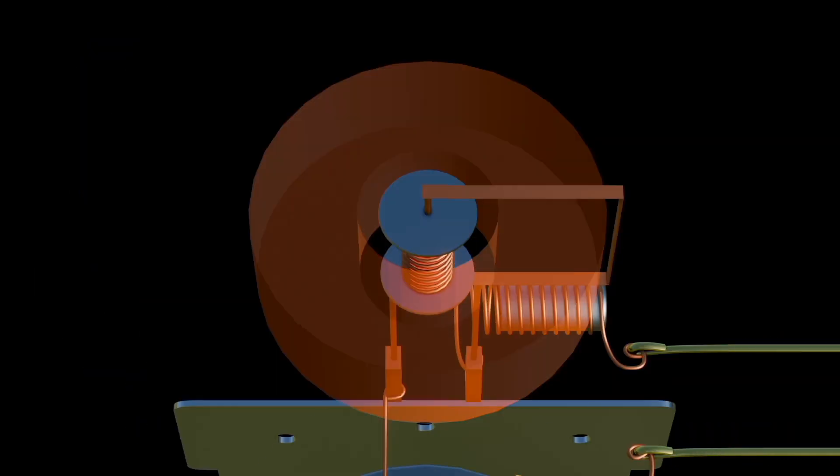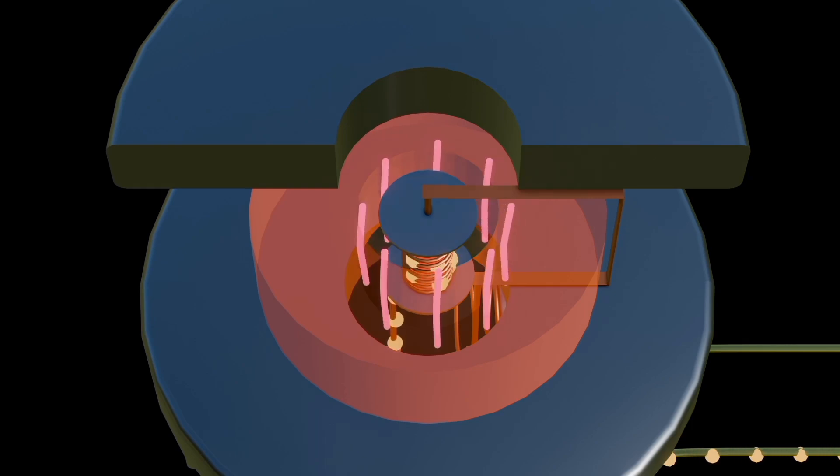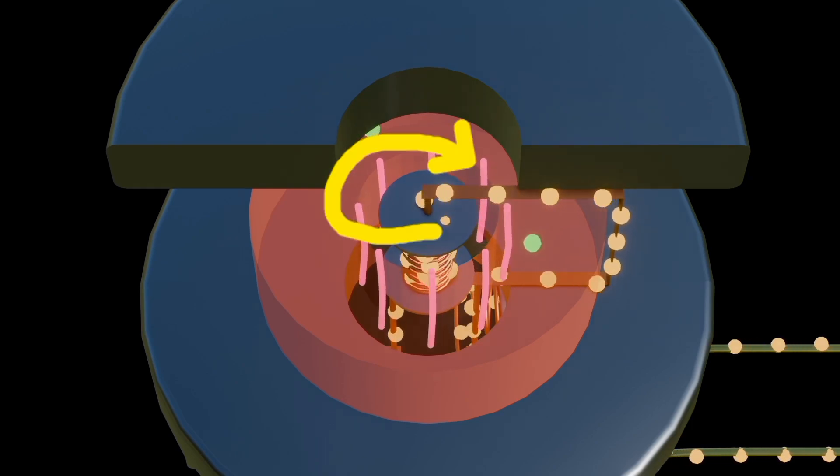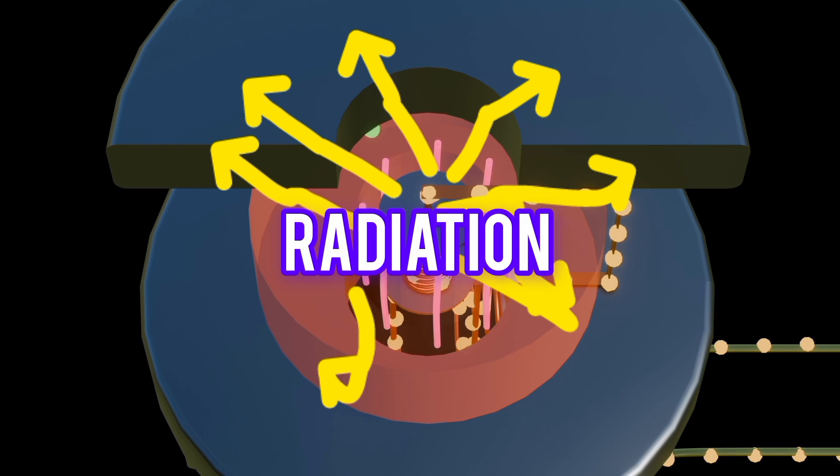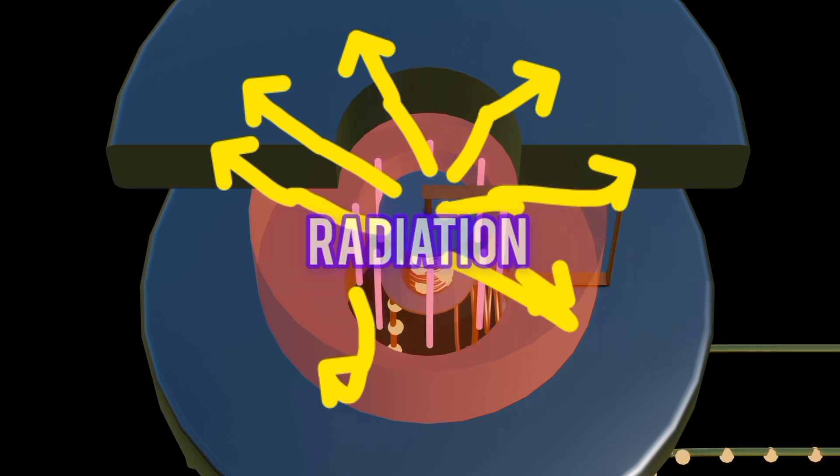And due to the interaction of moving charge and magnetic field, an electromagnetic wave is formed due to the radiation of the charged particles in the magnetic field.